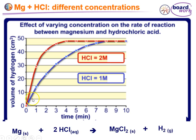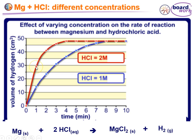If we did this reaction using a 1 molar solution as the control concentration, you get a certain rate of reaction. If we use a 2 molar solution — twice as concentrated, 2 moles per litre rather than 1 — there will be more collisions because the concentration is higher. So in the first minute you produce more hydrogen gas due to more collisions between the HCl and the magnesium, meaning the rate is faster.